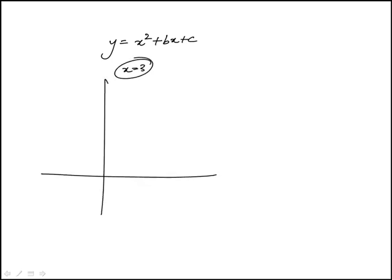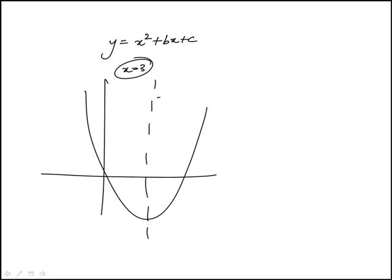So something like, that line is, the vertical line is x equals 3. And we're told that it passes through the point (5, 2).